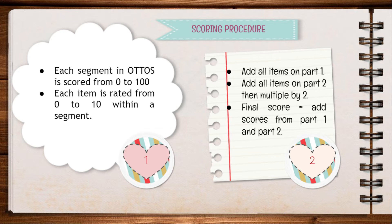For part 1, which has 10 items, the therapist needs to add all scores. For part 2, which has 5 items, the therapist also needs to add all scores, but then needs to multiply by 2. To find the final score, the therapist needs to add both scores from part 1 and part 2.